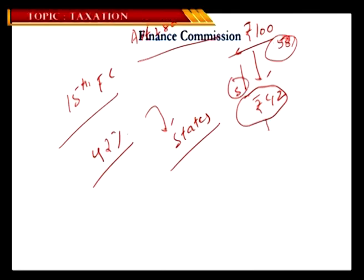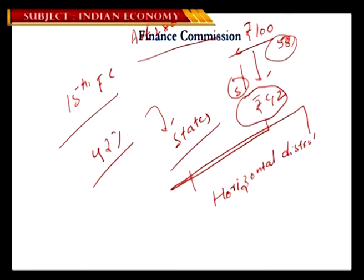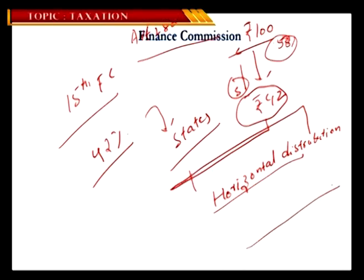How this 42 rupees is distributed among the various states is called horizontal distribution. There is a formula based on criteria such as the income of the state, income gap of the state, population, and forest cover. Based on these criteria, the revenue is shared among states and union territories.